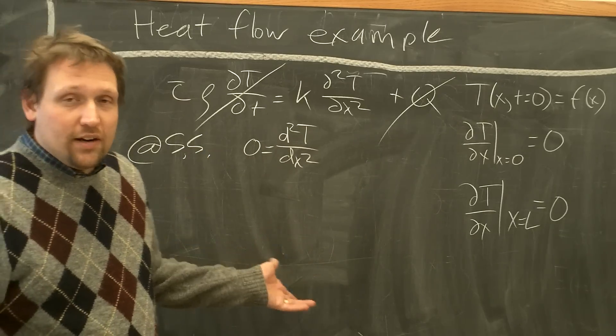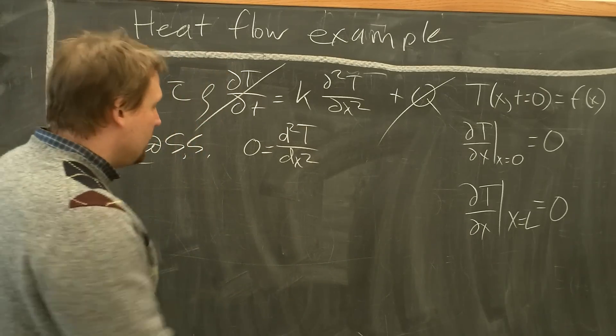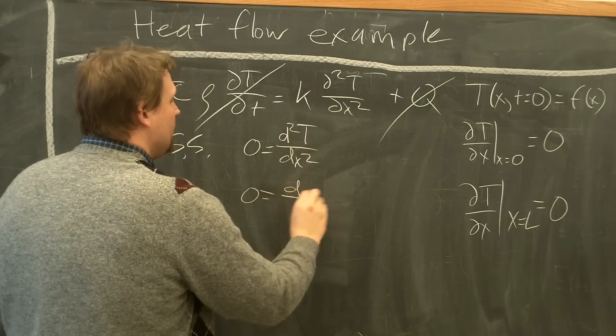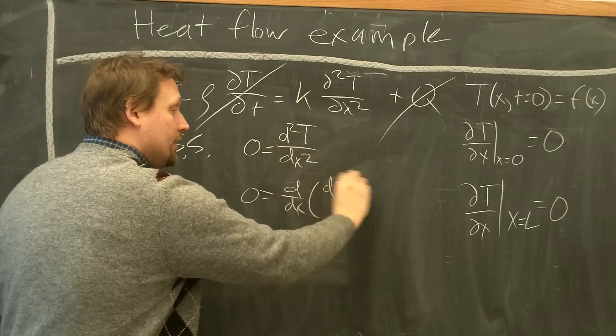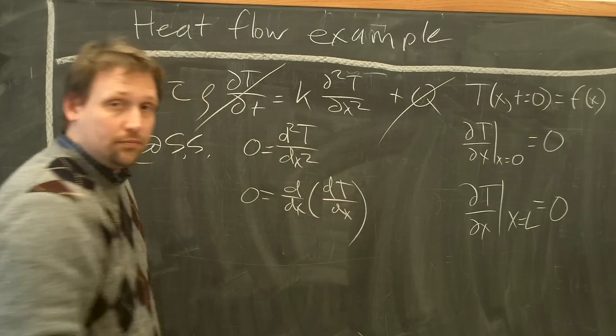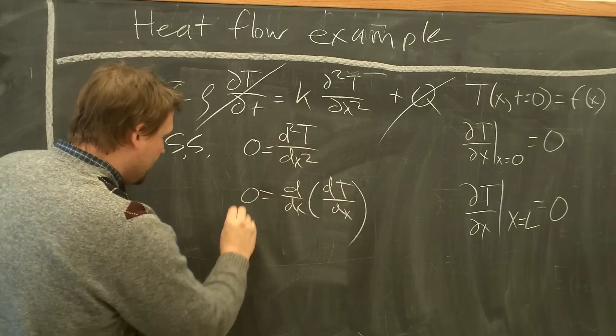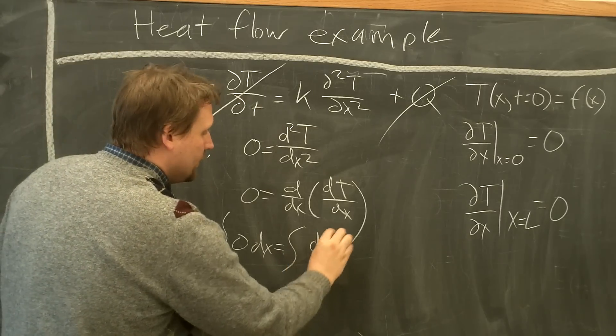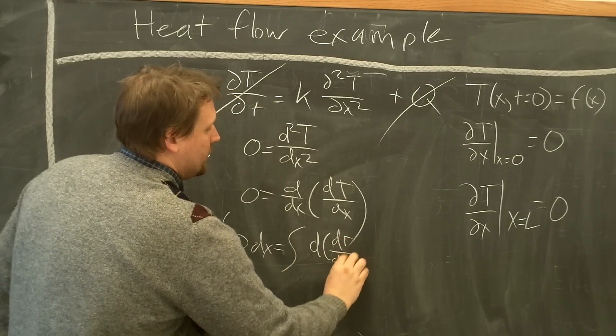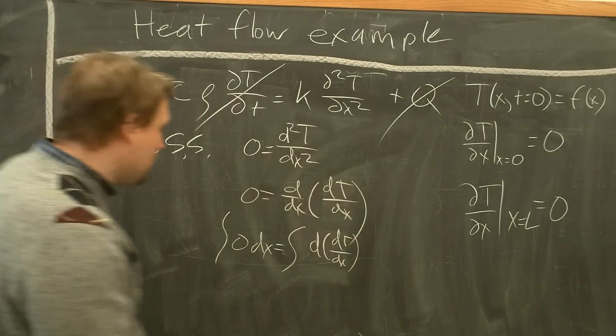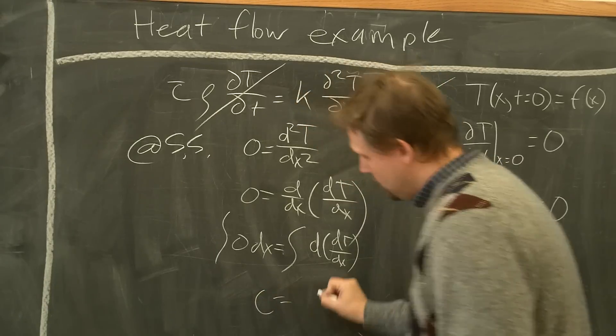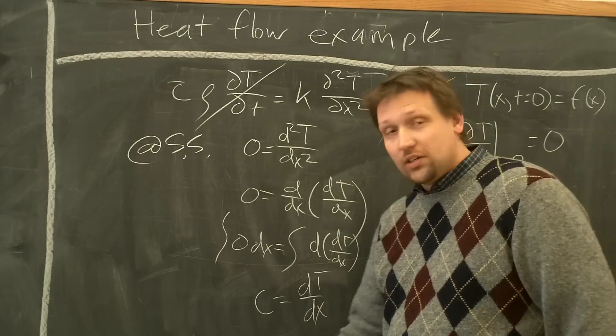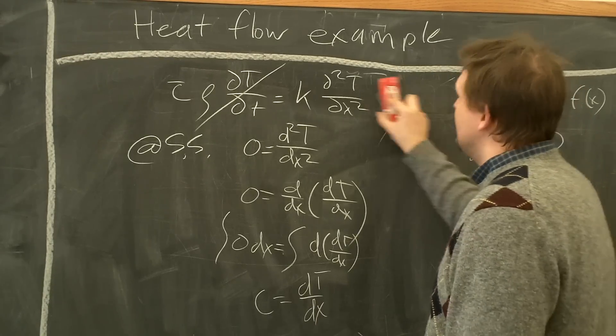Now what we have to do is integrate this equation twice, and we have the form of solution we need. To do this, separate it out. So we end up with zero equals d by dx of dt dx. Divide by dx, essentially, end up with zero dx on this side, integral equals integral of d dt dx on this side. Integrate this out, you end up with a constant equals dt dx.